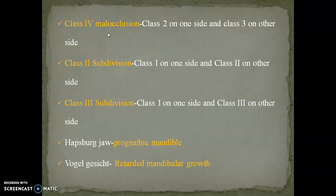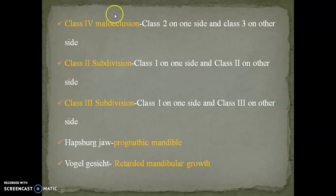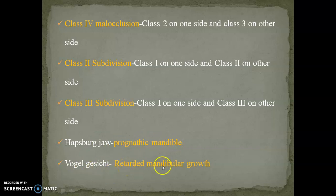We know class 1, class 2, and class 3 malocclusion. But what is class 4 malocclusion? It is class 2 on one side and class 3 on the other side. Regarding subdivision: class 2 subdivision means class 1 on one side and class 2 on the other side. Class 3 subdivision means class 1 on one side and class 3 on the other side. What is Hefsberg jaw? It is the prognathic mandible. What is vojal jacin? It is retarded mandibular growth due to ankylosis of the TMJ, seen mostly due to developmental disturbances.